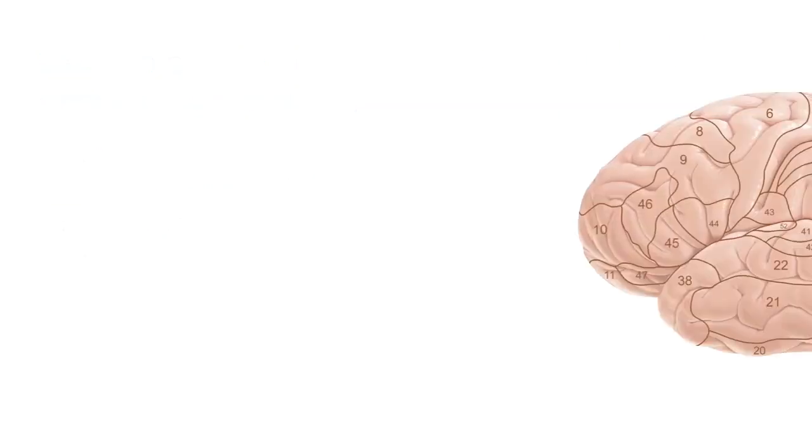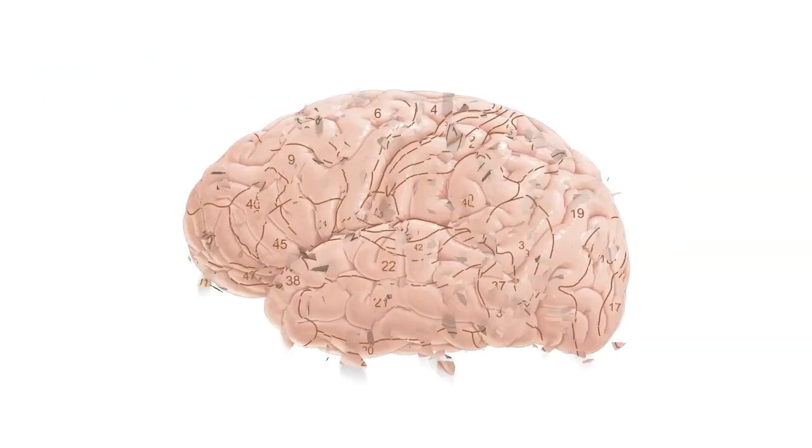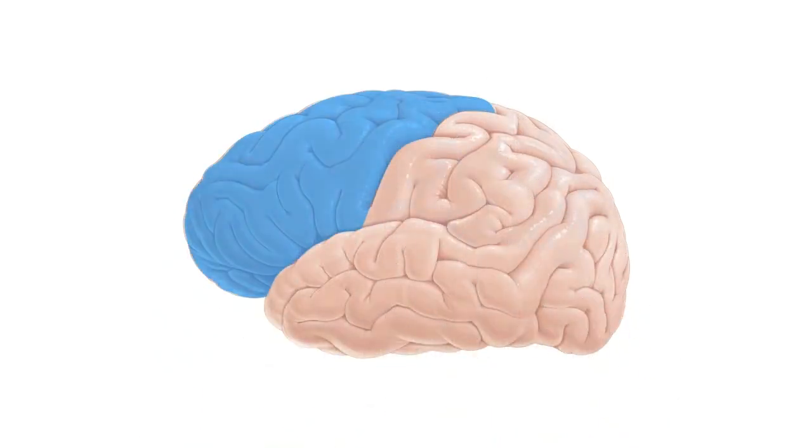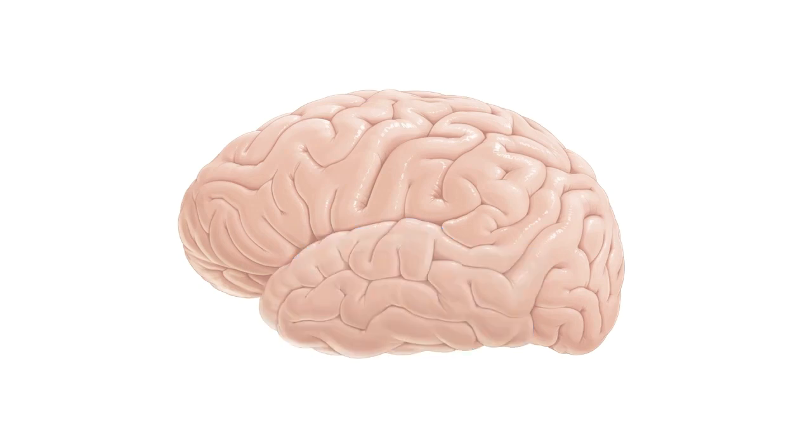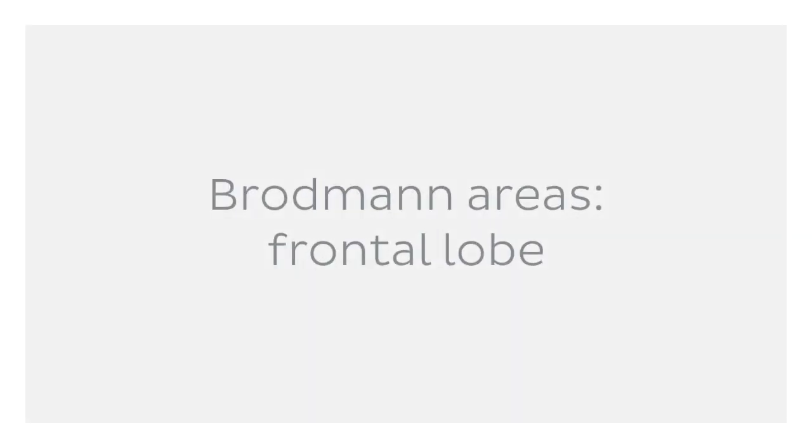As we explore these areas, we won't be examining them in numerical order, rather according to the lobes of the brain in which they are arranged. So without further ado, let's get started with the Brodmann areas found in the frontal lobe.